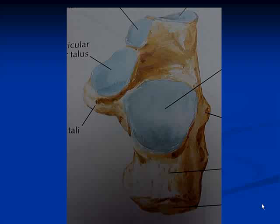The calcaneus, if you look at it from above, you'll find four articular surfaces: the posterior articular surface, then the middle for the head of the talus, then two anterior surfaces — one for the head again and one for the cuboid. The sustentaculum tali is cortical, hard bone. The rest of the calcaneus is a mass of cancellous bone with a thin cortex.